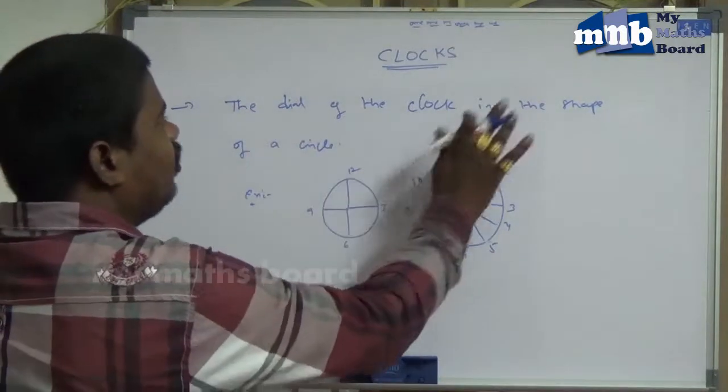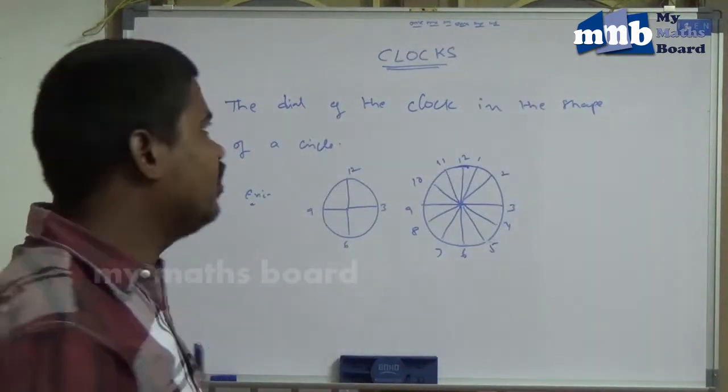So, the dial of the clock is in the shape of a circle. This is the first point in the clock.